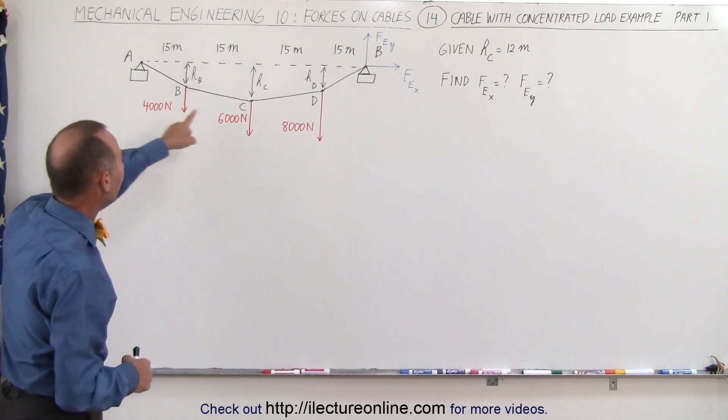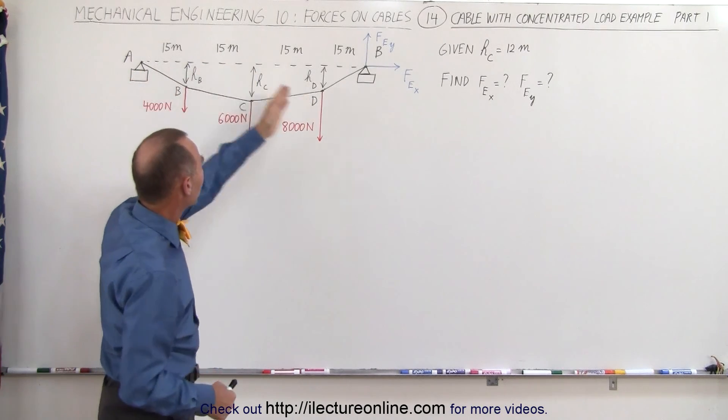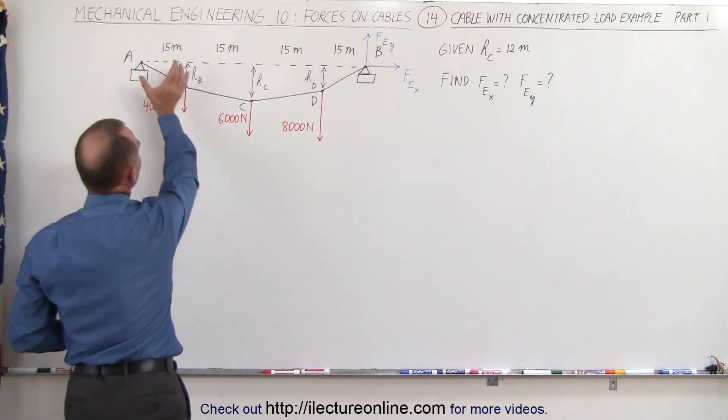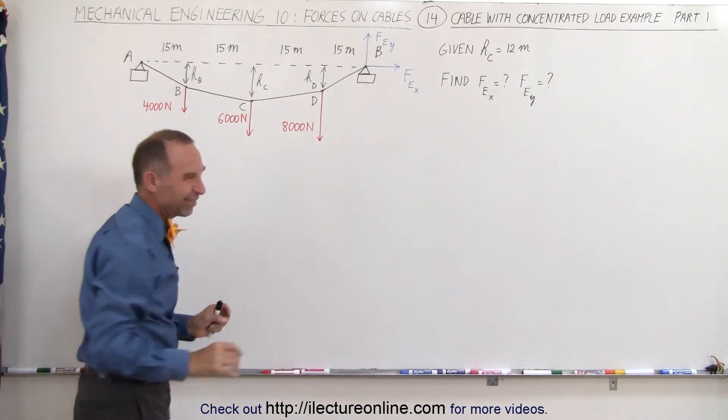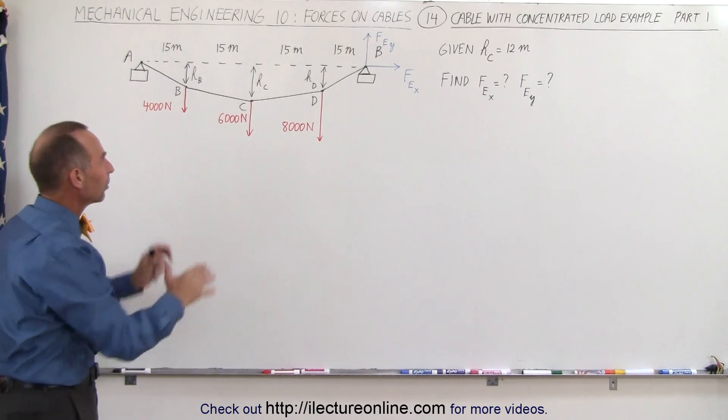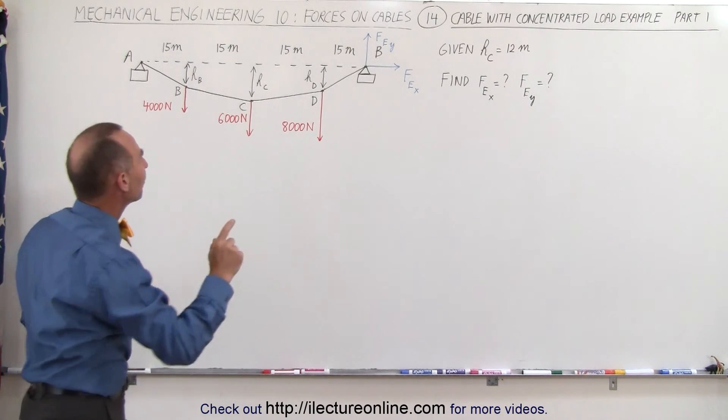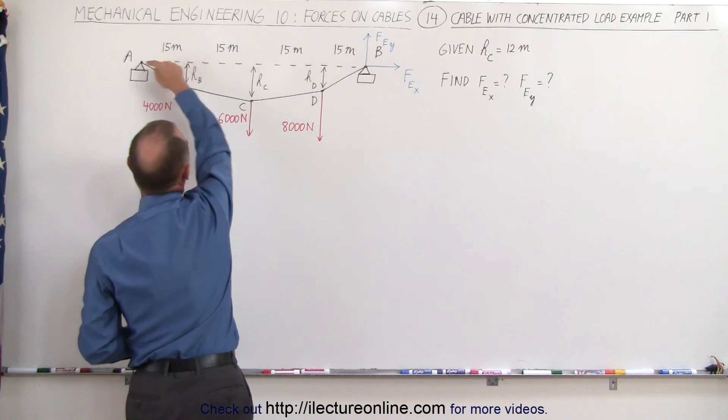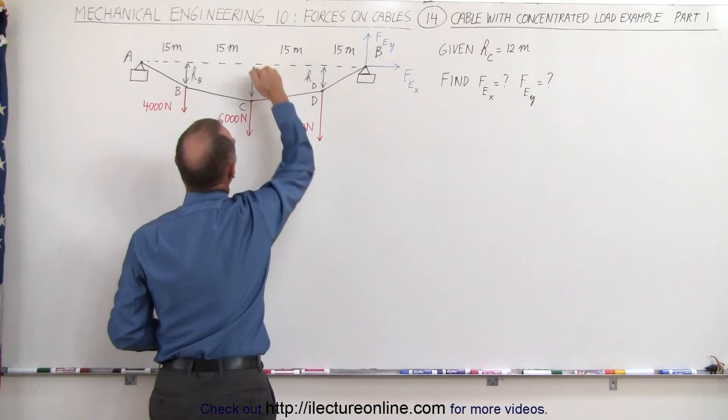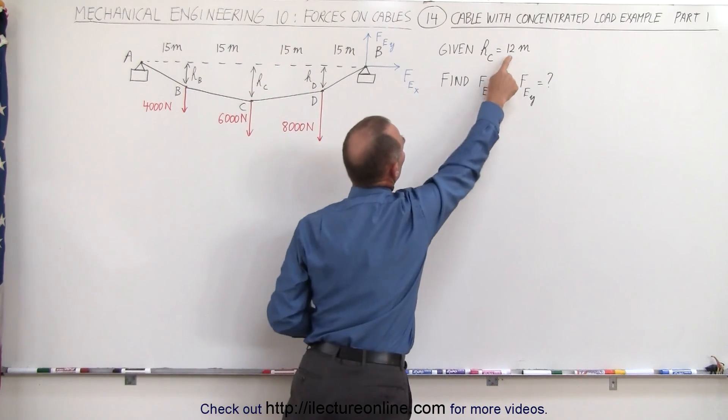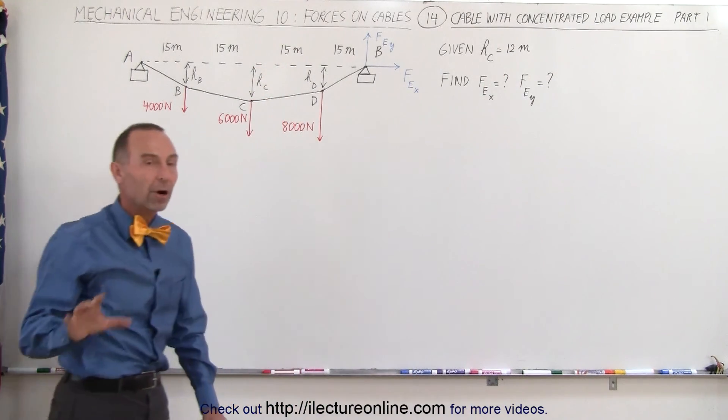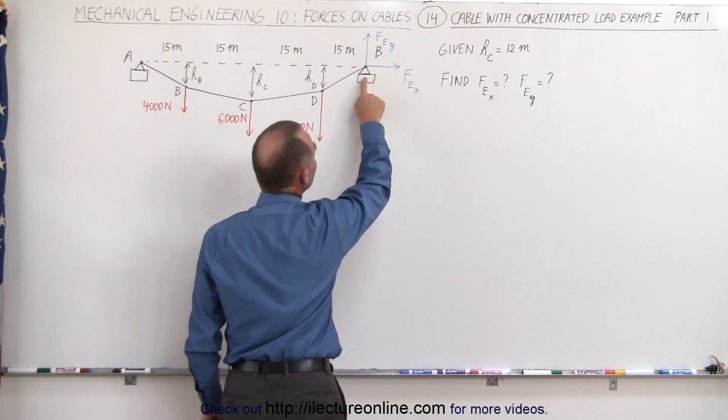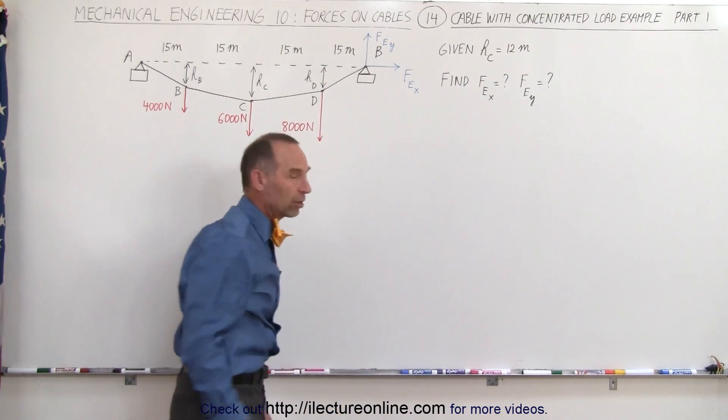So here we have a cable. The horizontal distance between the two support points is a total of 60 meters. All the attachment points are equal distance apart from one another. It's not quite drawn to scale, but assume that would be the case. We are given one sag dimension: the distance from the line that connects A to B to the lowest sag point at C is assumed to be 12 meters. And for part one, we're going to try to find the components at the support point B in the x direction and the y direction.